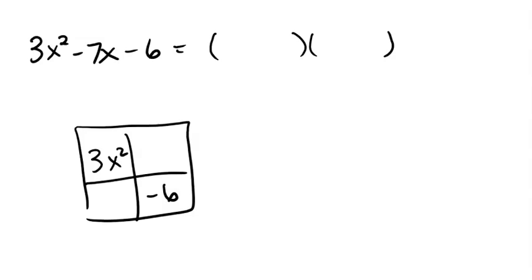Now to get 3x squared, the only ways to multiply and get 3 are 1 and 3, so I'm going to have an x and a 3x. Now to get negative 6, it might be negative 1 and 6, or it might be negative 2 and 3. So I have a little bit more to try here.